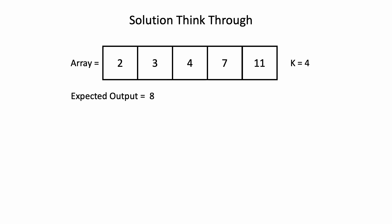Let's brainstorm about the solution using this example test case where k is equal to 4 and this is the input array. The expected output is 8, which is the 4th missing positive integer. We know that the array is sorted, which gives us a hint to use binary search.